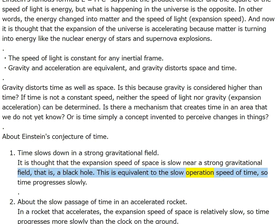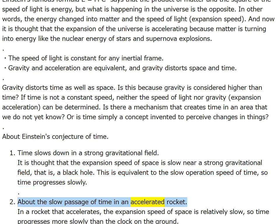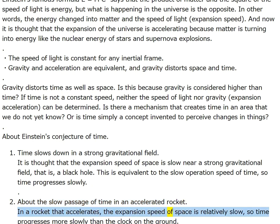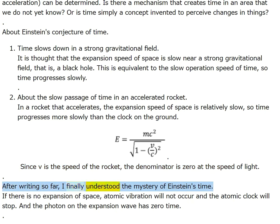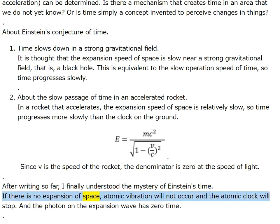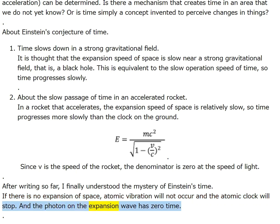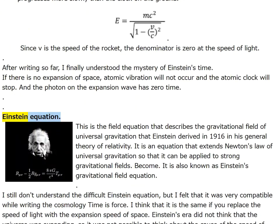About the slow passage of time in an accelerated rocket: in a rocket that accelerates, the expansion speed of space is relatively slow, so time progresses more slowly than the clock on the ground. After writing so far I finally understood the mystery of Einstein's time — if there is no expansion of space, atomic vibration will not occur, the atomic clock will stop, and the photon on the expansion wave has zero time.